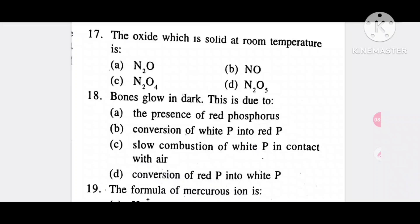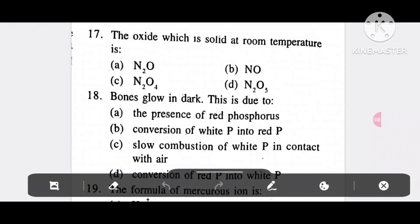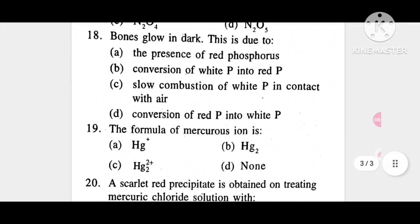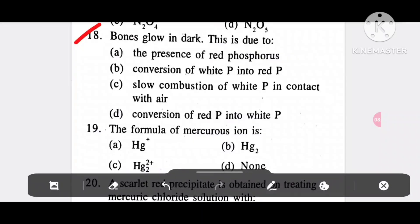Question 17: The oxide which is solid at room temperature is N2O, NO, N2O4, or N2O5. It is N2O5, option D. Question 18: Bones glow in dark. This is due to option A, the presence of red phosphorus; option B, conversion of white P into red P; option C, slow combustion of white P in contact with air; option D, conversion of red P into white P. It is slow combustion of white P in contact with air, option C.